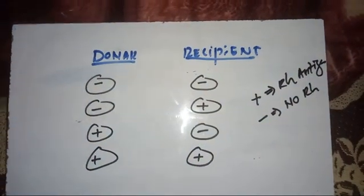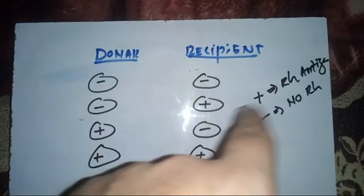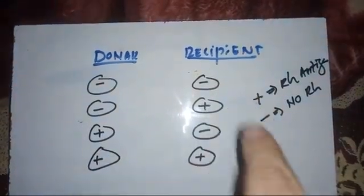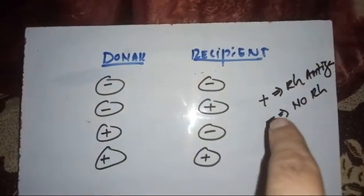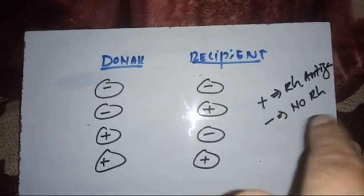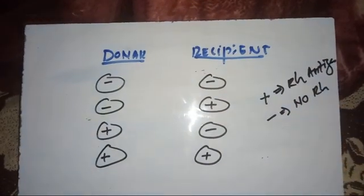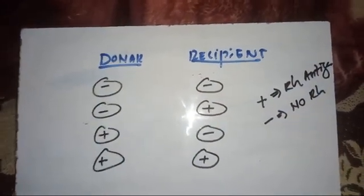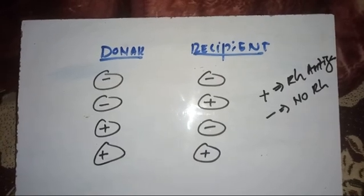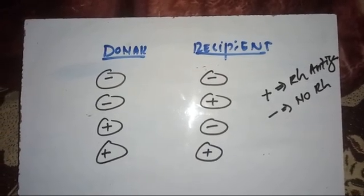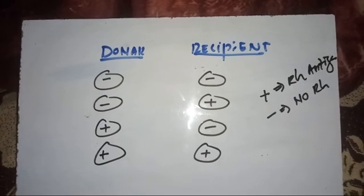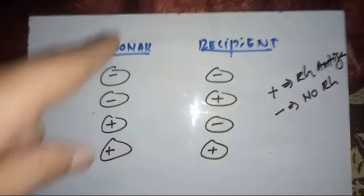The rule is: if a blood group has an antigen, it has no antibodies toward that antigen. So if it has Rh antigen, it has no antibodies against Rh antigen. Conversely, if it has no Rh antigen, it will have antibodies against Rh. Whatever antigen the blood possesses, there are no antibodies against it; whatever antigen is absent, there is an antibody toward it.